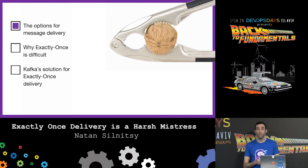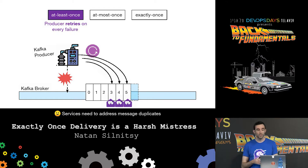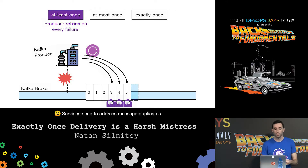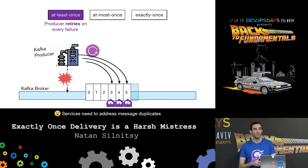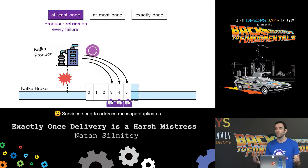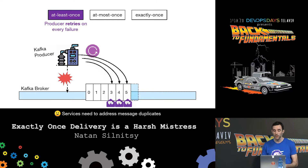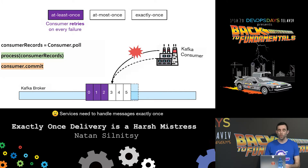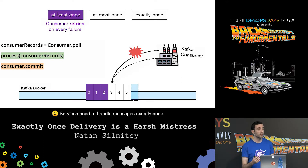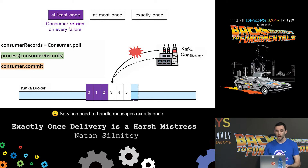A Kafka producer produces new messages at the very end of the partition, and the Kafka consumer reads messages sequentially. Once it's done processing a message it will commit it to the partition. If there's some problem - a restart or rebalancing of partitions among consumers - then we pick off where we left off: the first message that is uncommitted, in this case the message with offset three.